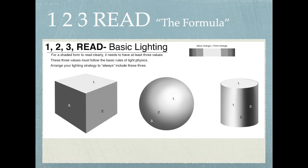Let's look at the second half of the formula. So value change equals form change, and now the one, two, three read. The one, the two, and the three, they all mean something. What that means is that the brain needs to see at least three values on a form in order to understand that it's three-dimensional. That's because we walk through a universe that uses height, width, and depth. So one, two, and three. Light, middle, and dark. That's as simple as you can get with it,